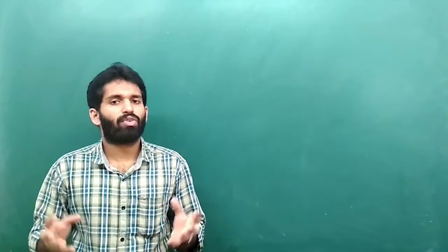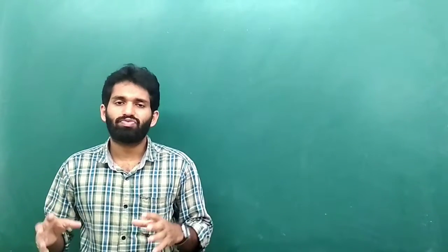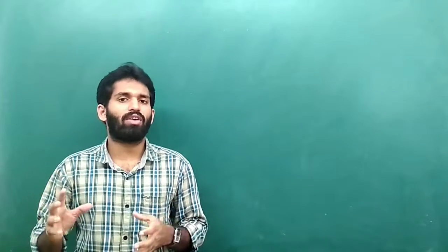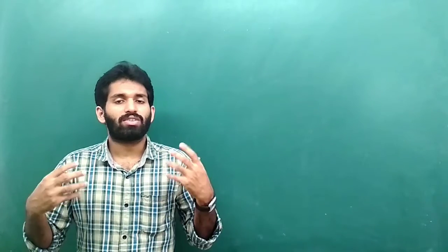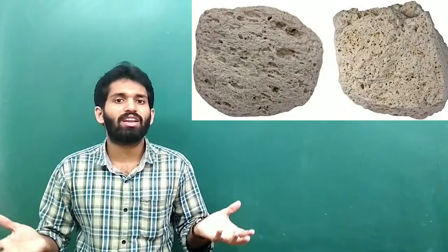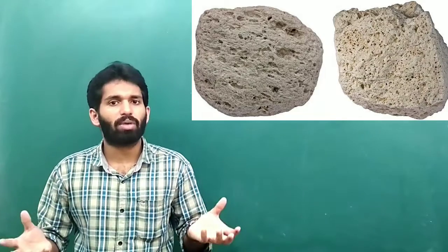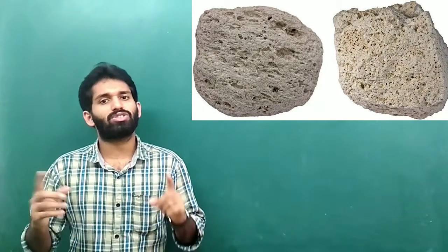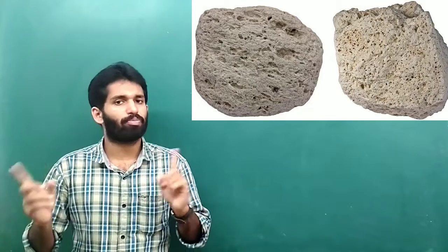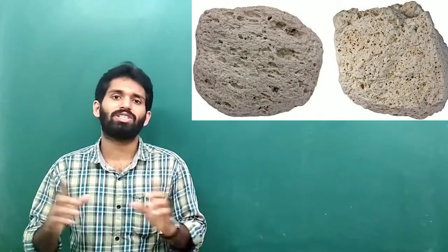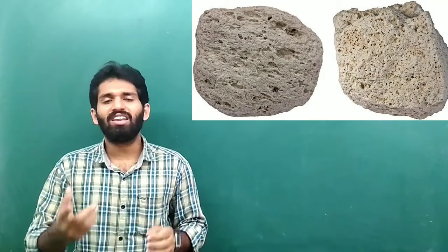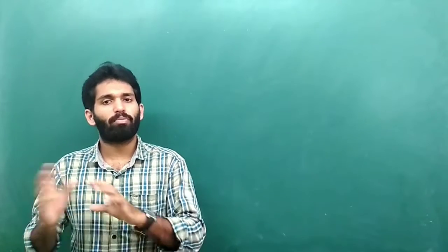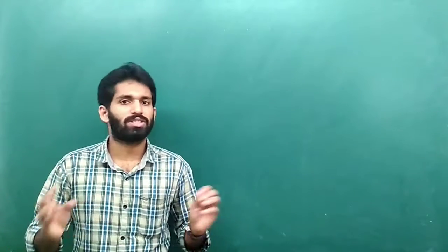The second type of rock is pumice. It is formed by the fast cooling of lava, and when it cools suddenly a lot of air bubbles get trapped inside these rocks. So it is porous, meaning it has holes in it. This pumice rock is used for polishing different surfaces.